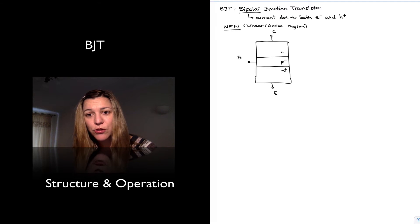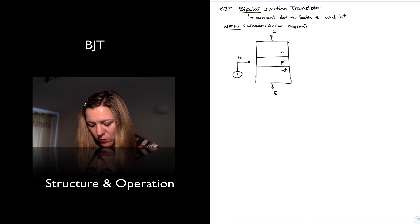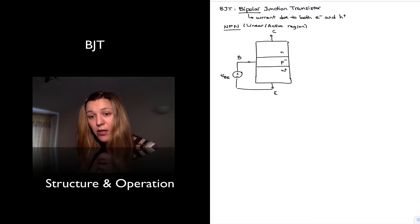Now, to place the transistor in the linear or active region, there are two things that we need to do. The first thing is forward bias the base-emitter junction, and so I'm going to connect here a voltage source VBE. And in order to forward bias that base-emitter junction, that voltage VBE needs to be approximately 0.7 volts.